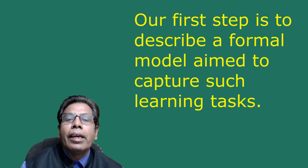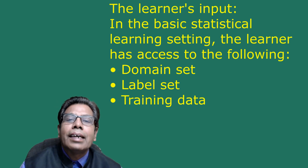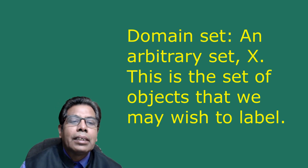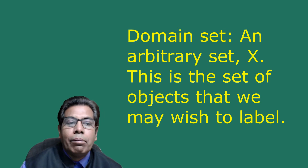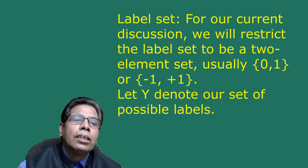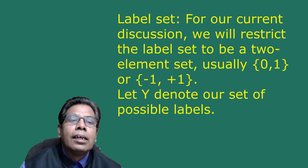Our first step is to describe a formal model to capture such learning tasks — the statistical learning framework. In the basic statistical learning setting, the learner has access to the following data: the domain set, the label set, and the training data. The domain set is an arbitrary set X — a set of objects we may wish to label, usually represented by a vector of features. We also refer to domain points as instances and X as the instance space. For the label set, we restrict it to a two-element set, usually {0, 1} or {-1, +1}.